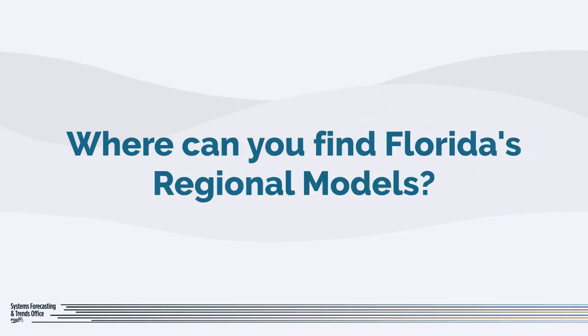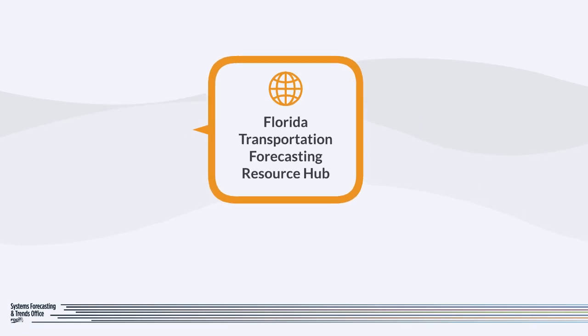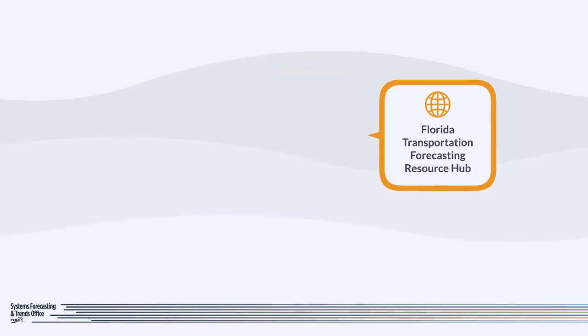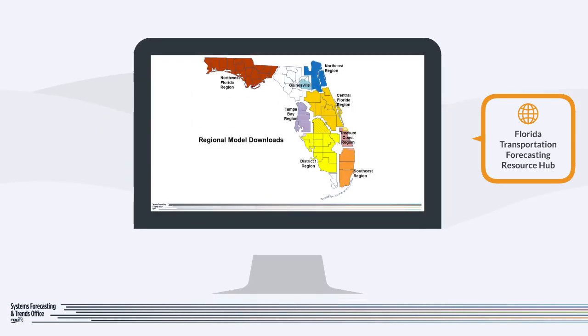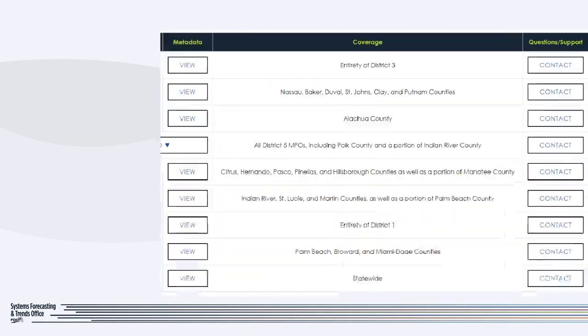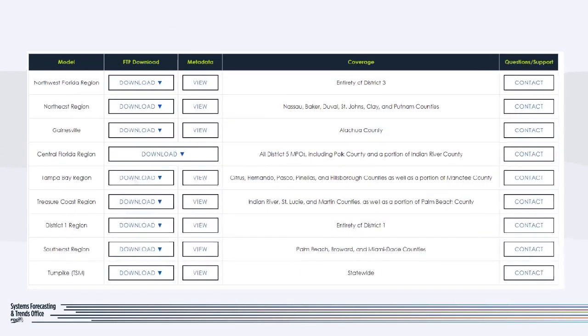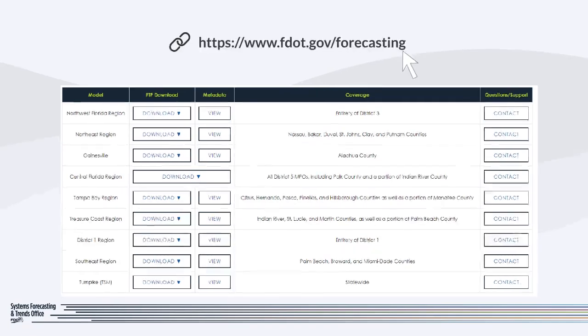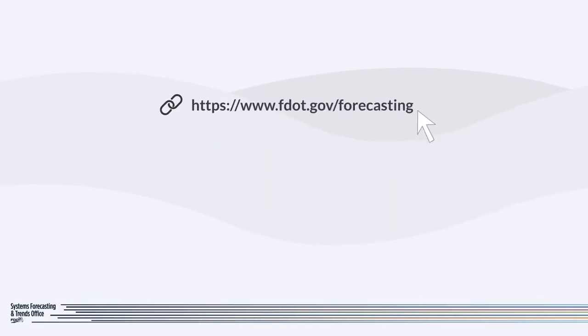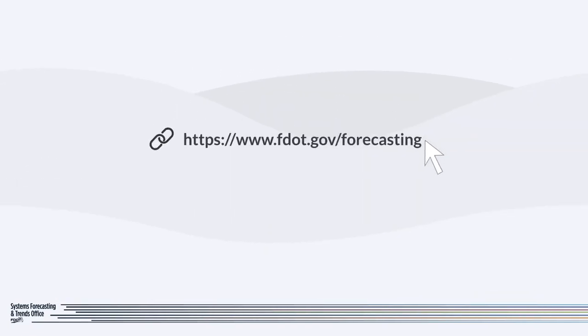Wondering where you can find Florida's adopted regional models? They're available on the Florida Transportation Forecasting Resource Hub, a central platform developed and maintained by the FDOT Systems Forecasting and Trends Office. This hub provides access to FDOT's models and resources, and keep in mind that running these models requires specific, dedicated software on your computer.